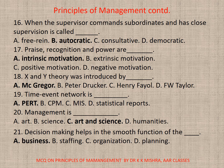Question 16: When the supervisor commands subordinates and has close supervision, it is called — correct option is b) Autocratic. Question 17: Praise, recognition, and power are — correct option is a) Intrinsic motivation.